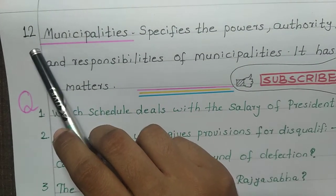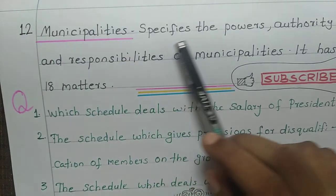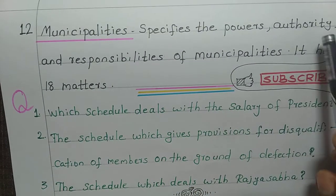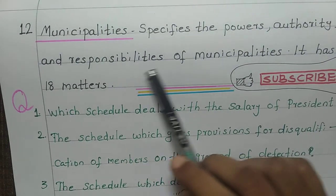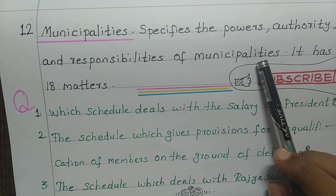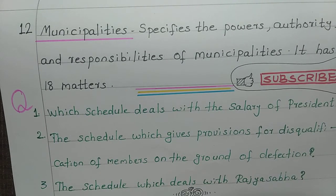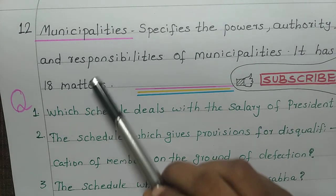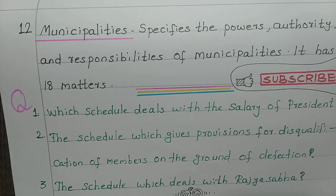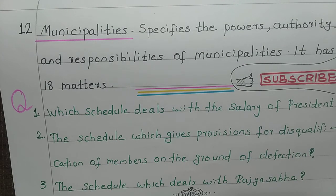Twelfth schedule: keyword is municipalities. This schedule specifies the powers, authority, and responsibilities of municipalities. It has 18 matters. These are all 12 schedules of the Indian constitution.